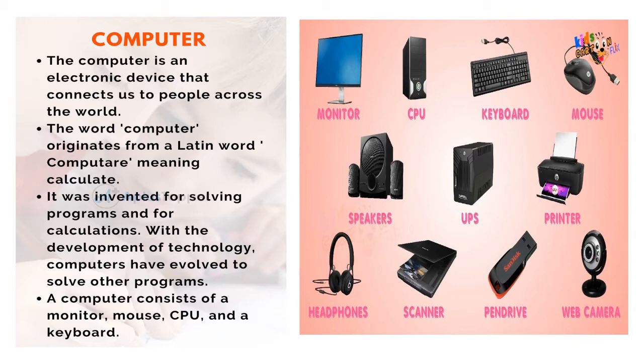A computer consists of a monitor, mouse, CPU and a keyboard. So you can see the different parts of a computer: monitor, CPU, keyboard, mouse, speakers, UPS, printer, headphones, scanner, pen drive and web camera.